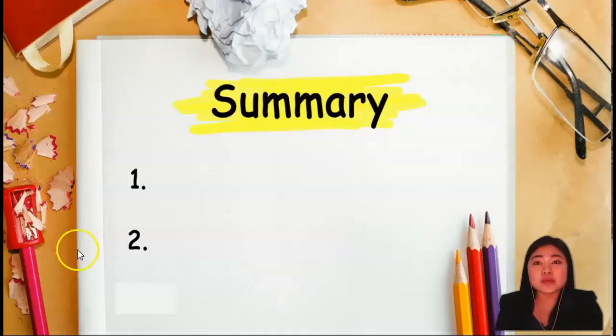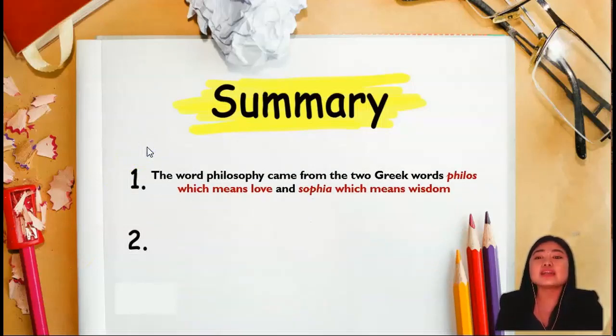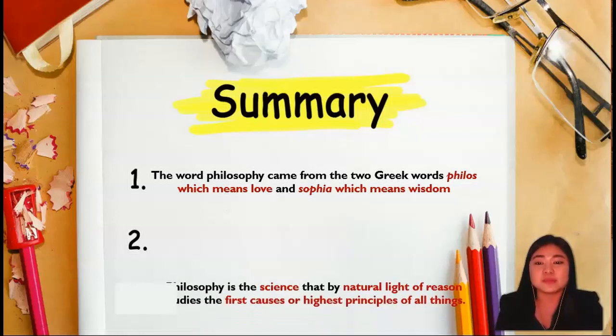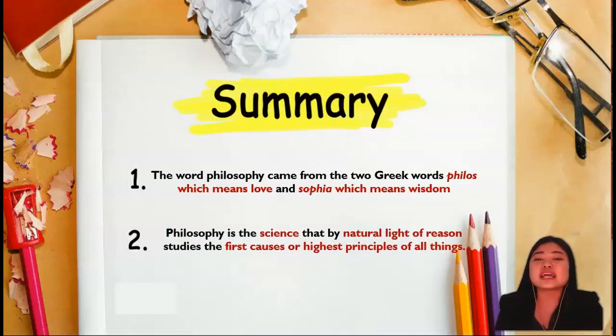To summarize our lesson for today: the word philosophy came from two Greek words, philos which means love and sophia which means wisdom. Therefore, philosophy is the love of wisdom. Philosophy is the science that by natural light of reason studies the first causes or highest principles of all things.